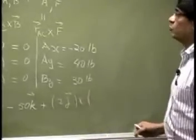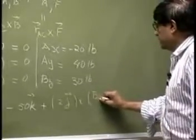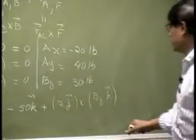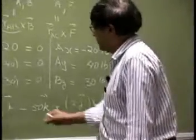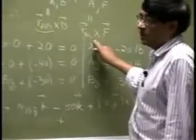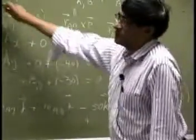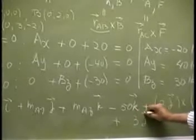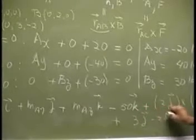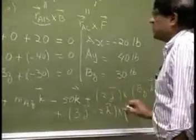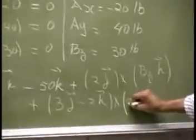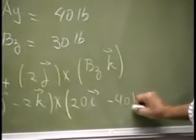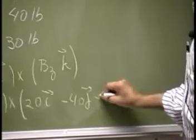Cross product with BCK. That is one of the terms. Plus, now we are looking at RAC. So, this minus this. That means you have 3J minus 2K, cross product with the force plus 20I, 40J and 30K.